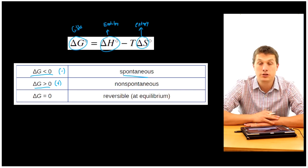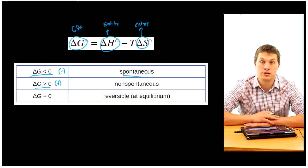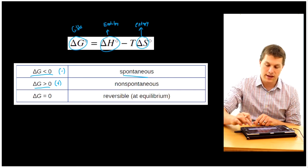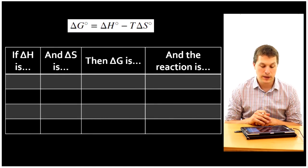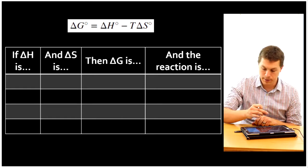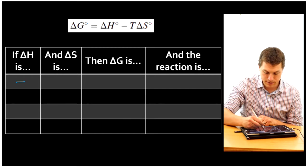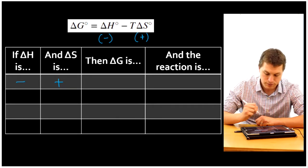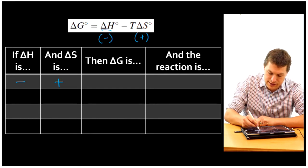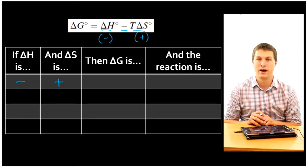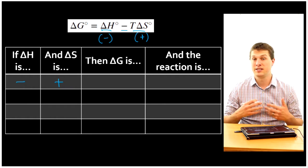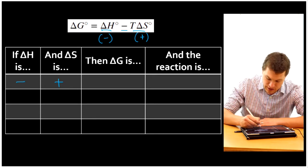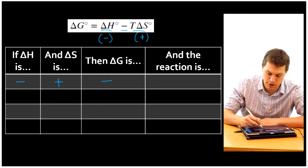If you're given the enthalpy and entropy of a reaction, you can figure out the Gibbs free energy. It's useful to know what the signs of delta H and delta S do to delta G, and that's what we'll fill out in this table. First, consider the case where delta H is negative and delta S is positive. That means the delta H term is negative, and we're subtracting a positive number. A negative number minus a positive number always gives a negative — so delta G is always negative. And a negative Gibbs free energy means the reaction is spontaneous.